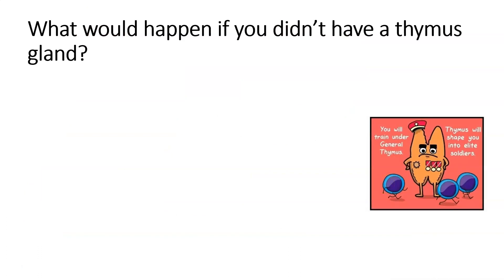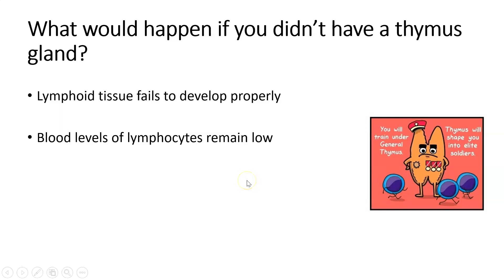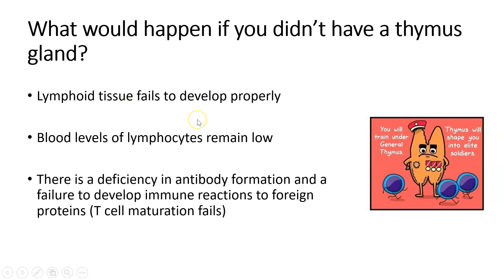What would happen if you didn't have a thymus? Some people have to have this organ removed. The T cells will not mature properly and you will have an issue with your lymphocyte count in your blood. If there's a deficiency in antibody formation, this can have serious consequences for your immune system — so the thymus is actually really important.